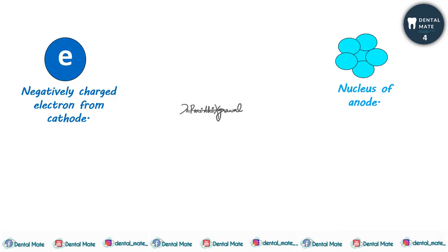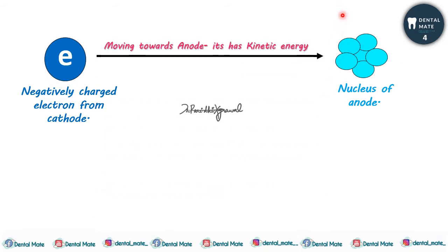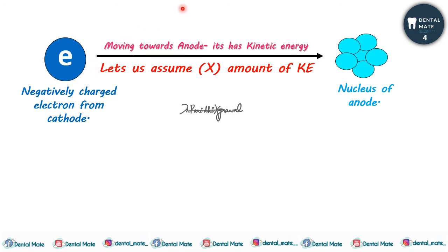The electron is negatively charged — a negatively charged electron from the cathode — and since it is moving towards the anode, and since this electron is moving towards the nucleus of the anode, it has some kinetic energy. Let's assume this electron has X amount of kinetic energy, and in the coming videos we'll see how much of that energy is converted into X-ray photons.